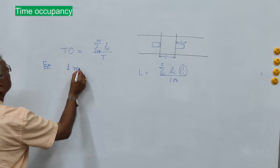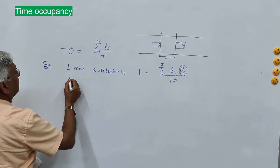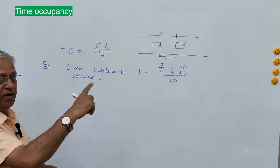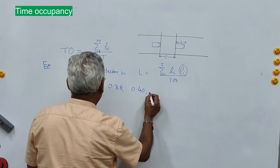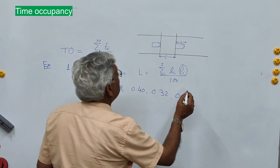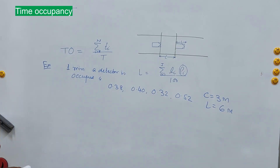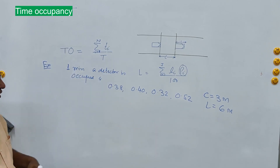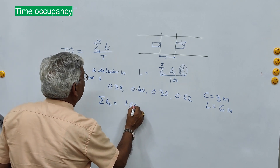As an example: during a period of one minute, a detector is occupied by four vehicles, and the time taken by each vehicle to pass through the detector zone are recorded as 0.38 s, 0.40 s, 0.32 s, and 0.52 s. The loop detector length is 3 m and the average length of the car is 6 m. The total time taken by the four vehicles is: 0.38 + 0.40 + 0.32 + 0.52 = 1.56 seconds.